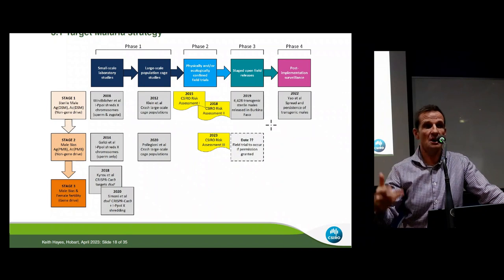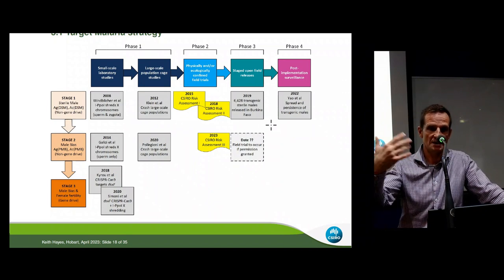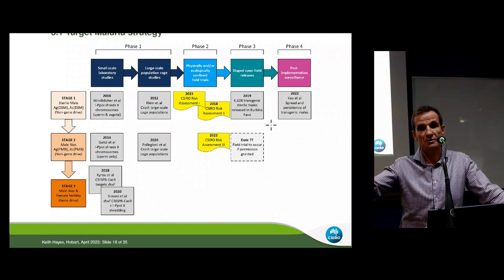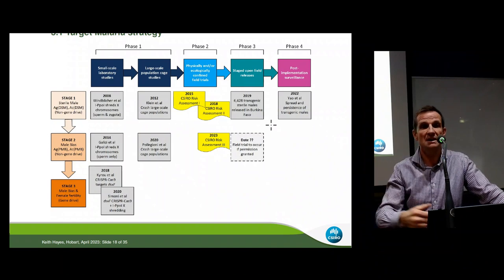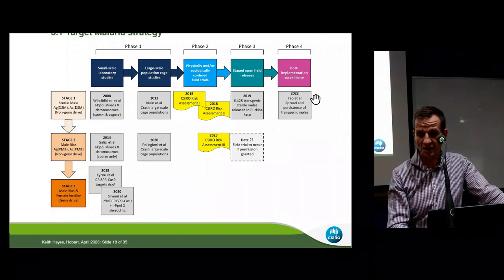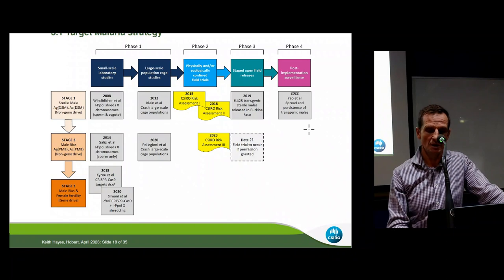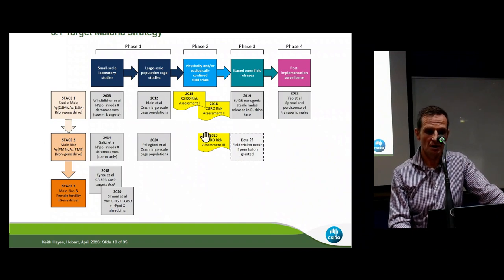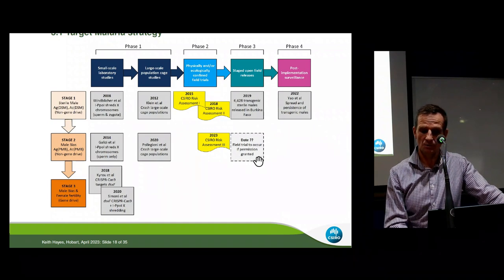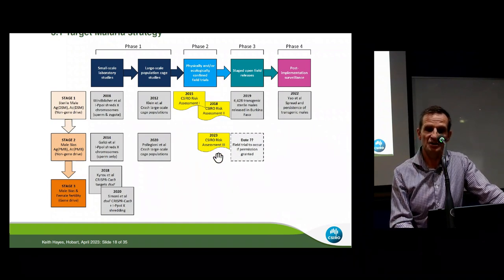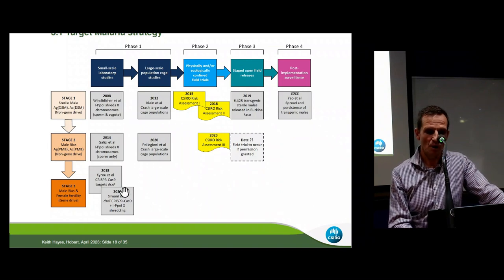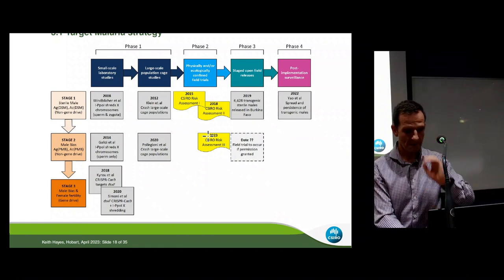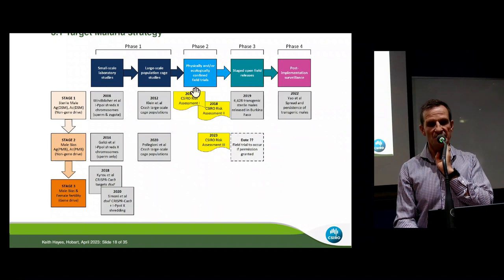We did two risk assessments for stage one back in 2015–2018, ahead of a field trial of sterile transgenic mosquitoes that occurred in July 2019 in Burkina Faso — the first time ever transgenic mosquitoes were released in Africa. The aim was to measure how far they went, how long they lived for, and how successful they were at mating. Last year the results of that field trial were published. We're currently finalising the stage two risk assessment ahead of a planned field trial of male-biased mosquitoes, and stage three timelines are not yet determined.